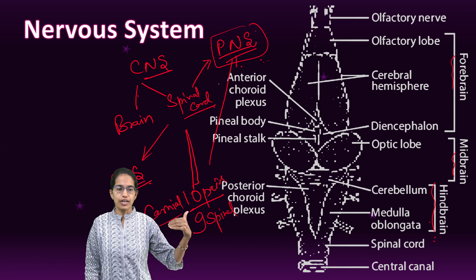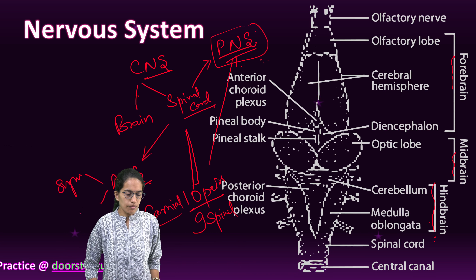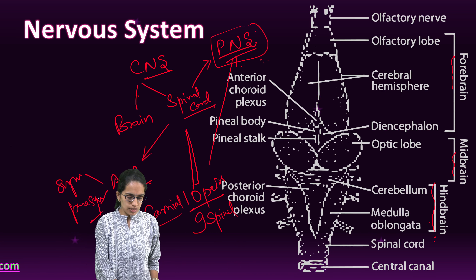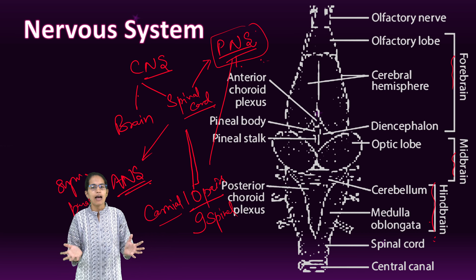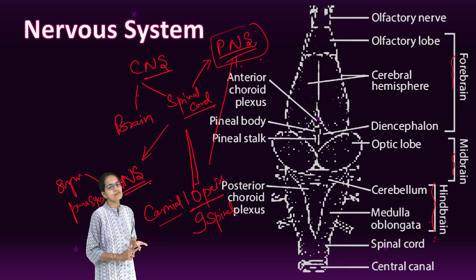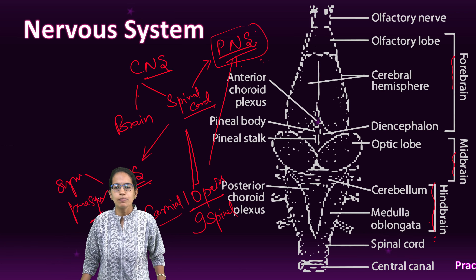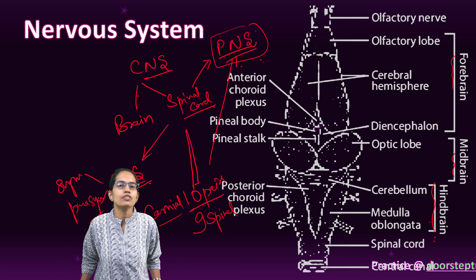Under the central nervous system we have the brain with forebrain, midbrain, and hindbrain, and the spinal cord. Under peripheral and autonomic: peripheral has 10 pairs of cranial nerves and 9 pairs of spinal nerves, and the autonomic nervous system is composed of sympathetic and parasympathetic systems. This is a quick summary of the digestive and nervous systems of the frog. We will cover similar topics in the next lecture.